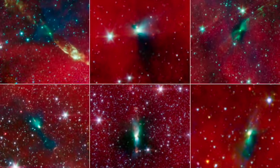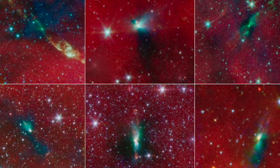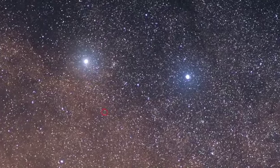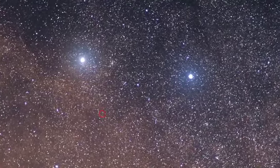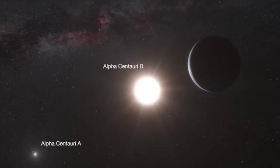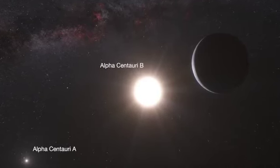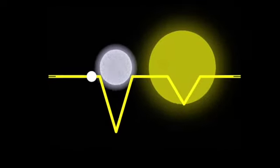A binary star system is a star system consisting of two stars orbiting around a common centre of gravity. Systems consisting of two, three, four or more stars are called multiple star systems. When observing it can be hard to distinguish between optical double stars and a binary star system. When observing a binary star, a small wobble can be seen due to the gravitational forces they exert on each other.